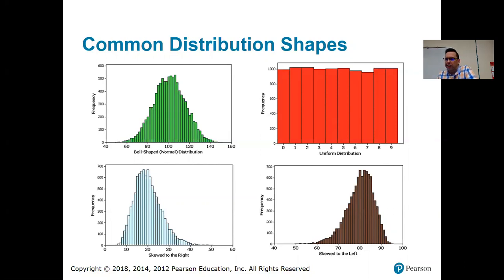The one in the top right here is an example of what we call a uniform distribution. So, that's where each class has roughly the same frequency. A perfectly uniform distribution, the top of the histogram would just be completely flat. Every class would have exactly the same frequency. Again, this is not perfect, but they're all pretty close.